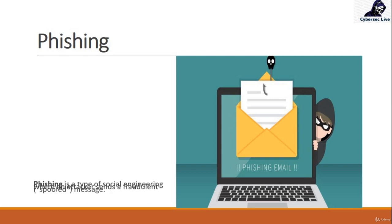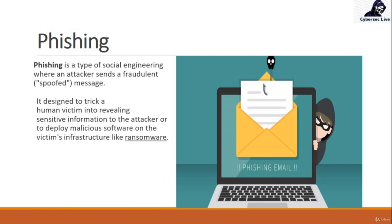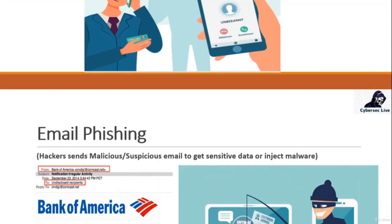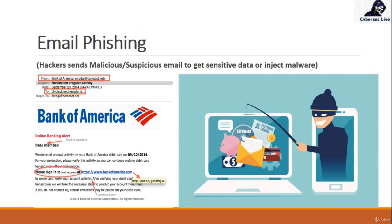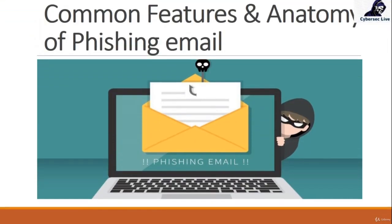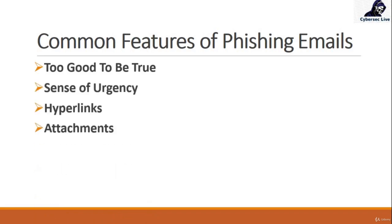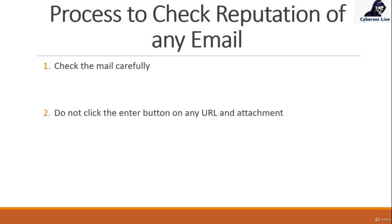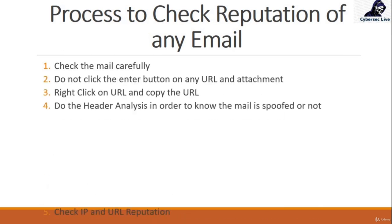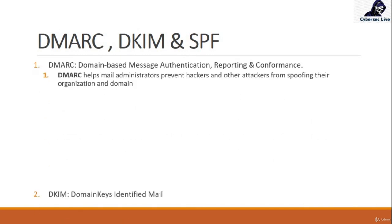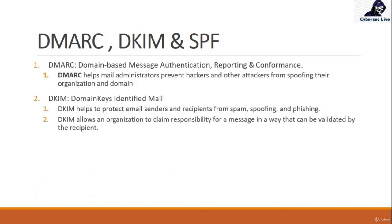We'll start from phishing — from the basics: what is phishing, what are its types. We will explain each and every type of phishing, what it is, what are the common features, what are the mitigations, what is the anatomy, and how to check the reputation of any email through header analysis. We will also cover DMARC, DKIM, and SPF — what they are and their role in header analysis.